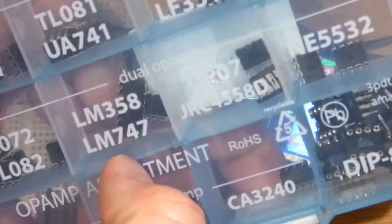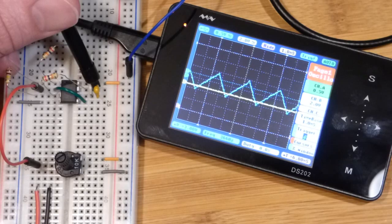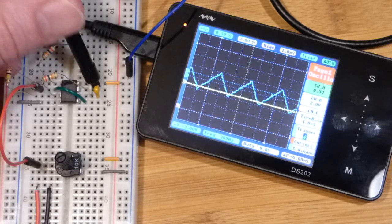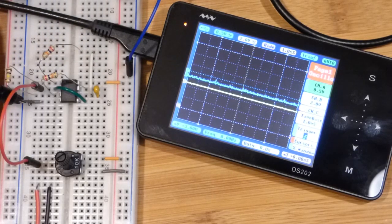It's a dual op amp. There's two op amps in it. So pin number 7 here is the output of one of the op amps. Pin number 8 is a power, the positive power.